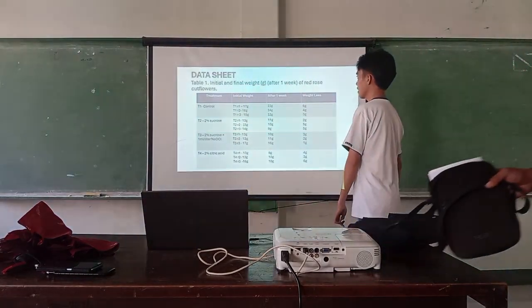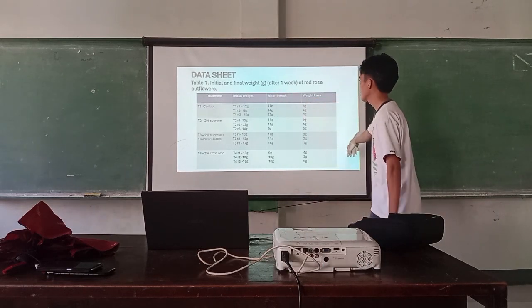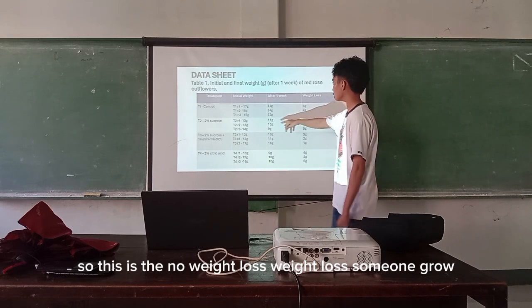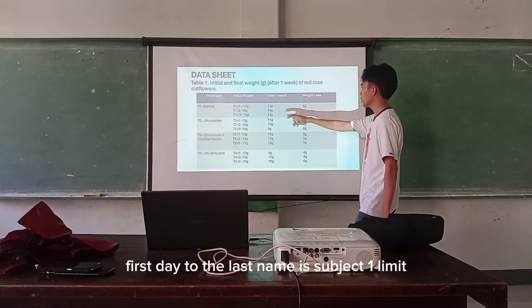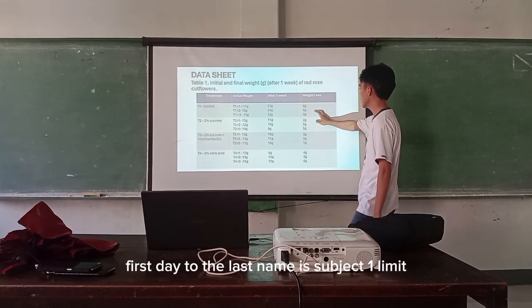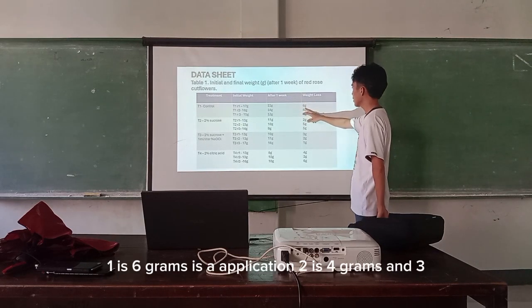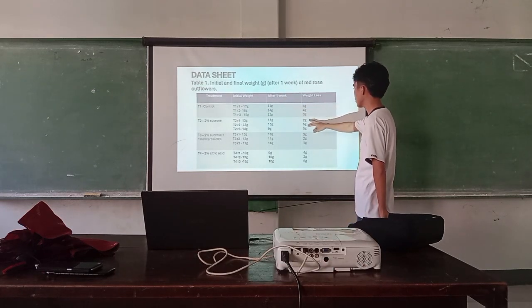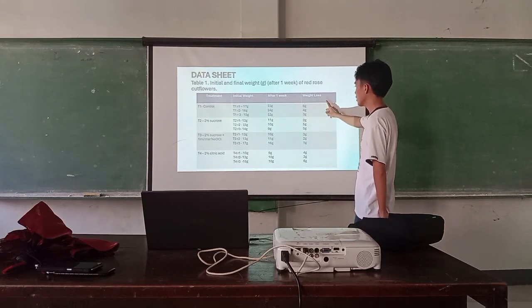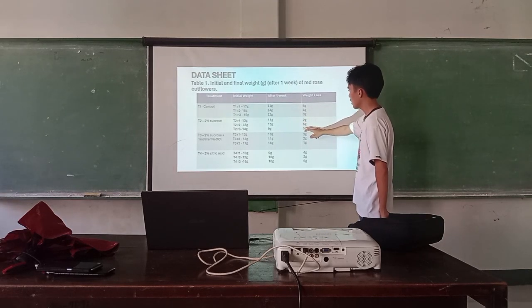This is the initial weight. After one week, this is the weight loss overall from first day to last day. In Treatment 1, Replication 1 had a weight loss of 6 grams, Replication 2 had 4 grams. For Treatment 2 with 2% sucrose, R1 had a weight loss of 2 grams, and R2 had 5 grams.